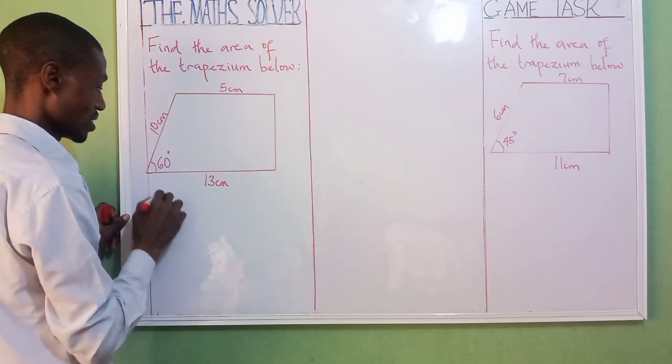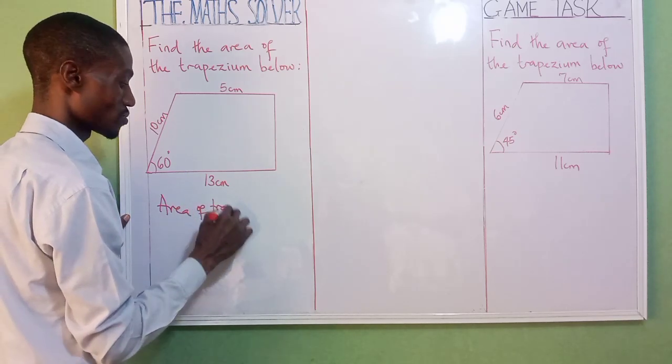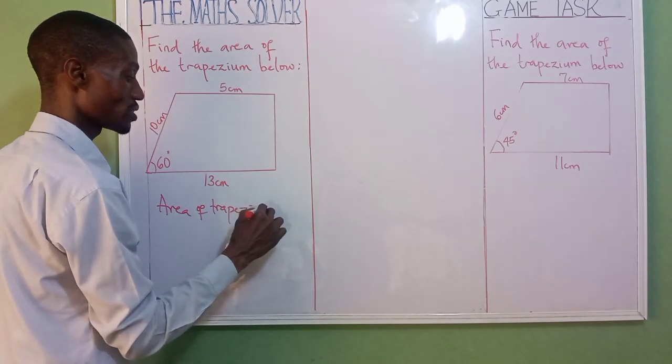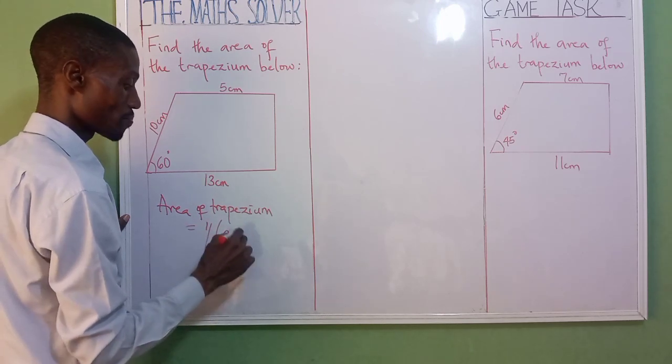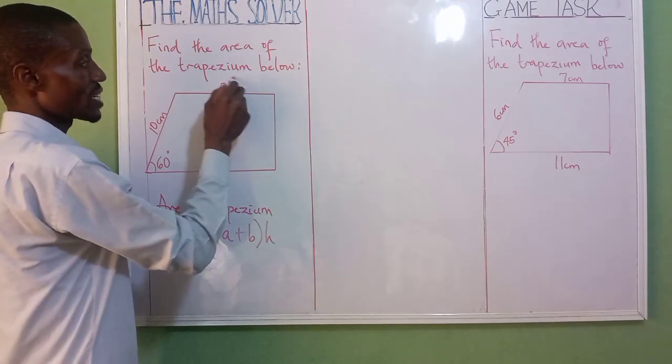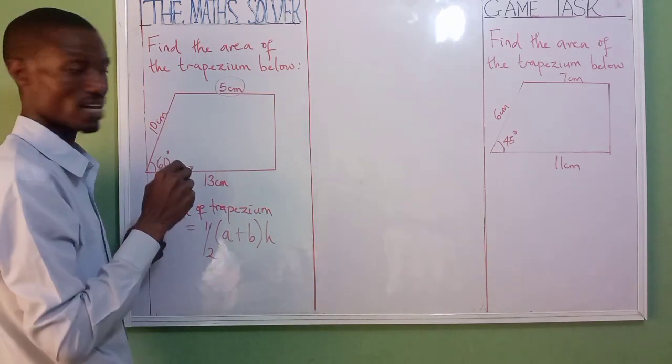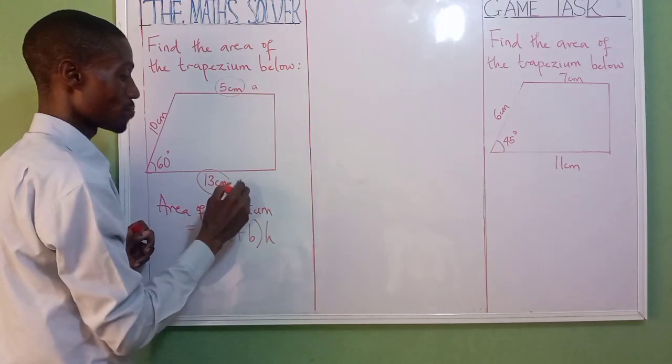Normally, the area of your trapezium is 1/2 times (a + b) times h. This is our a, as you can see - 5. These are b. These are a. Our b is 13.